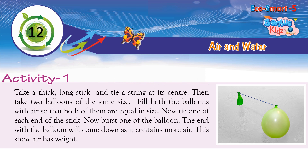Activity 1: Take a thick, long stick and tie a string at its center. Then take two balloons of the same size. Fill both balloons with air so that both are equal in size. Tie one balloon at each end of the stick. Now burst one of the balloons. The end with the inflated balloon will come down as it contains more air. This shows that air has weight.